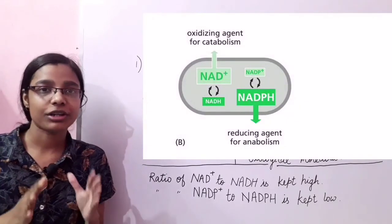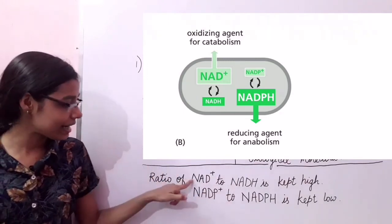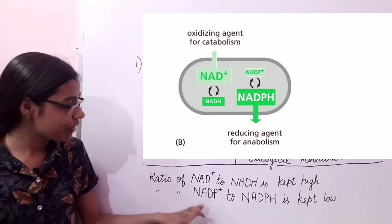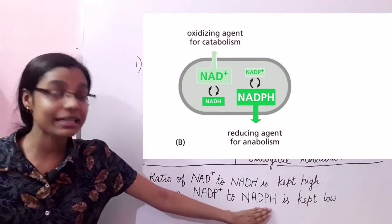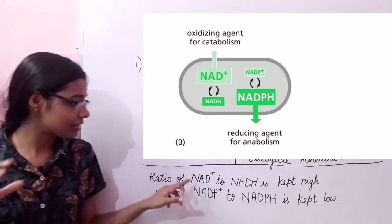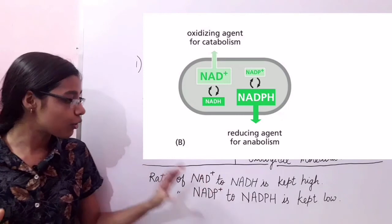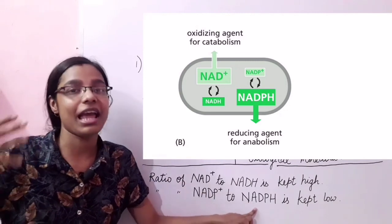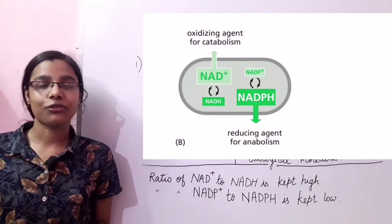Another important point: the ratio of NAD to NADH is kept high, meaning the NAD concentration is high within the cell. However, the ratio of NADP to NADPH is kept low, meaning the NADPH concentration is high in the cell. So in the cell, the concentration of NAD is high and NADPH is high, because NAD can act as an oxidizing agent and NADPH can act as a reducing agent.